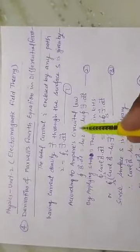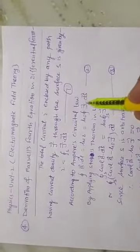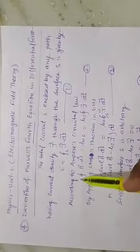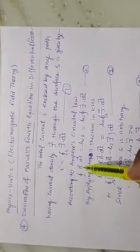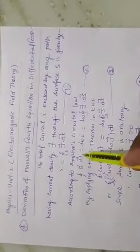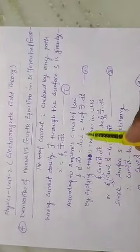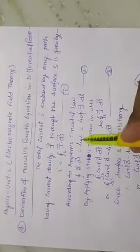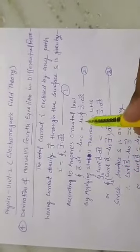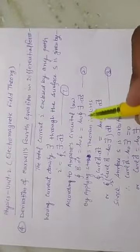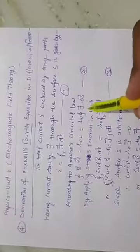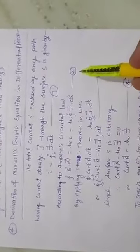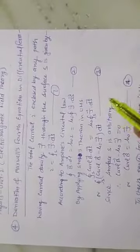According to Ampere's circuital law, the closed integration of B vector dot dL vector is equal to μ₀I, which equals μ₀ times the closed integration of J vector dot dS vector. Equation number 2.